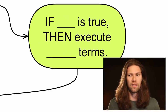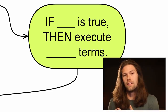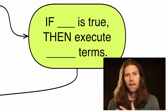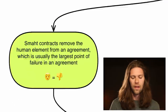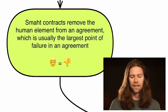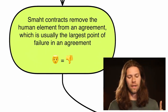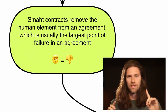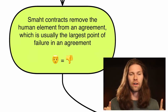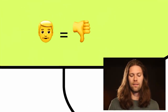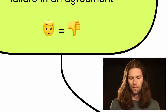You might be thinking that's what a contract is — and yes, it's a contract that does a little bit more than a typical paper contract. Smart contracts remove the human element from an agreement, which is arguably the largest point of failure in any agreement. Human equals no-go — humans are the problem.